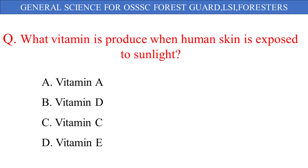What vitamin is produced when human skin is exposed to sunlight? The given options are: A. Vitamin A, B. Vitamin D, C. Vitamin C, D. Vitamin E. And the correct answer is option B: Vitamin D.